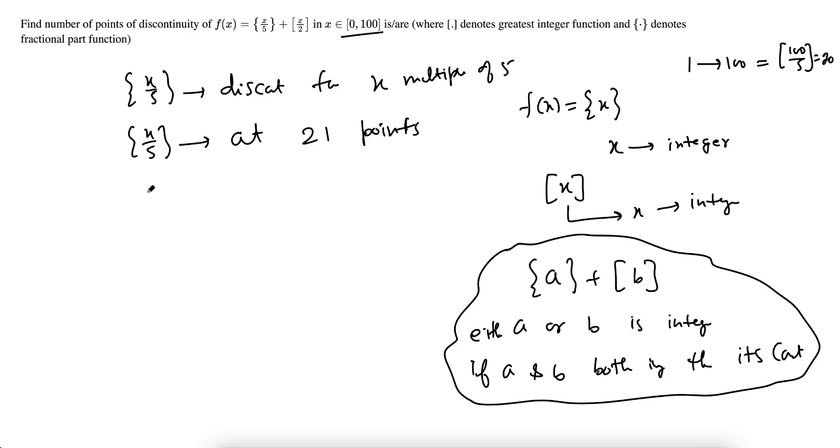Carefully understand this. Greatest integer of x by 2 will be discontinuous when x by 2 is integer, when x is multiple of 2, means even number. So 0 to 100, 1 to 100, 50 even numbers and 0 is also even number. So there will be at 51 points.